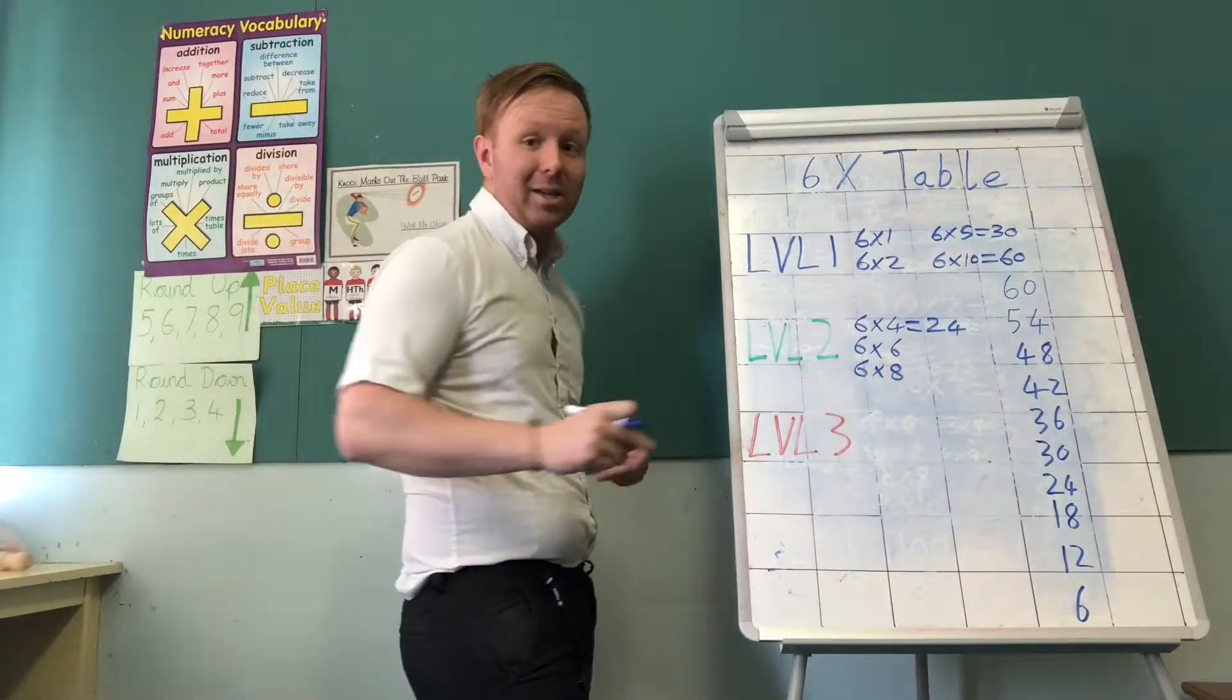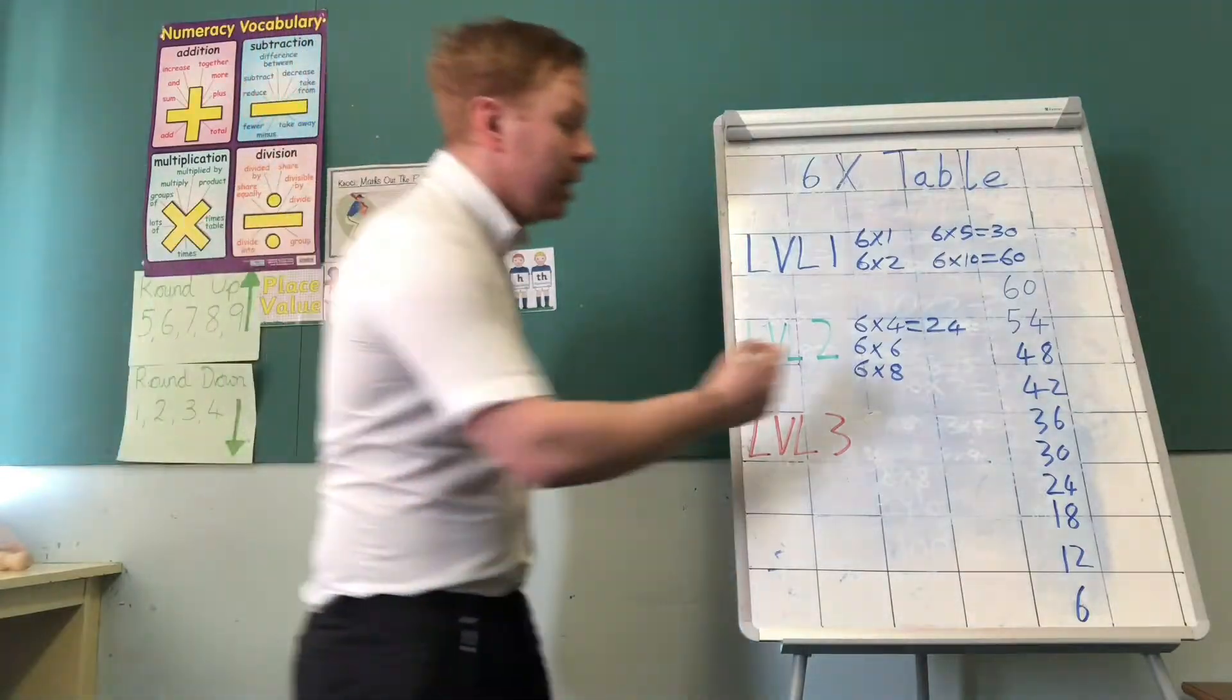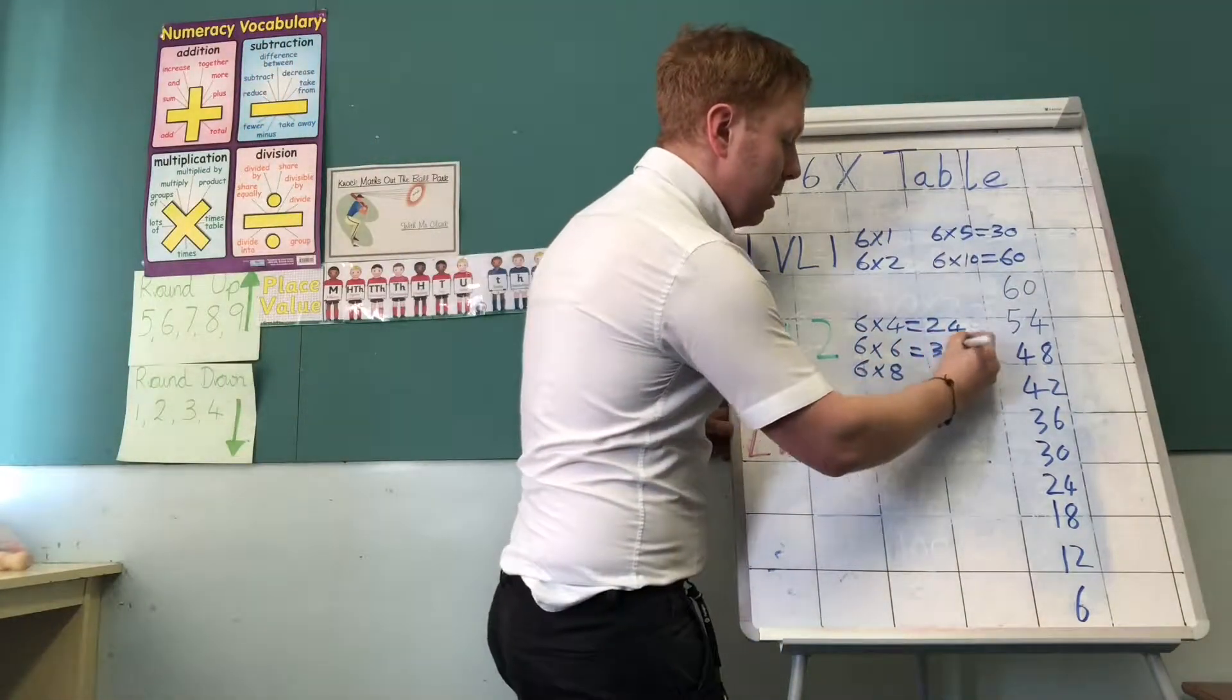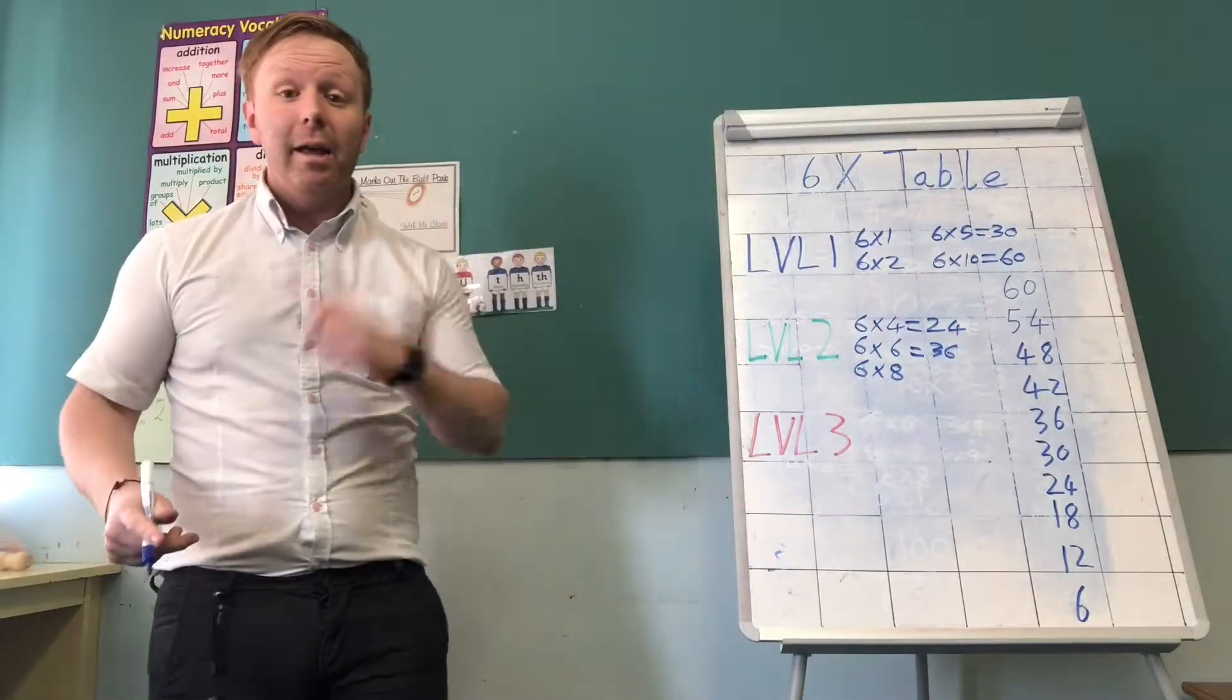You might be able to guess what 6 times 6 is. 6 times 6 is 36. 6 times 8 is 48.